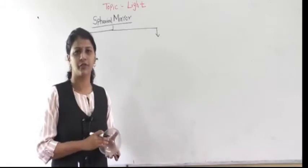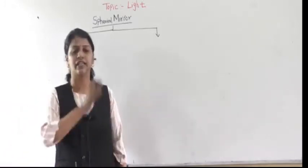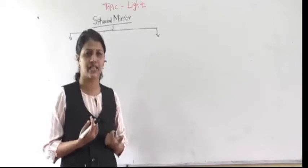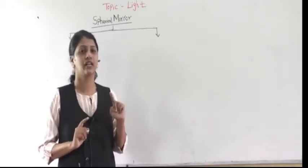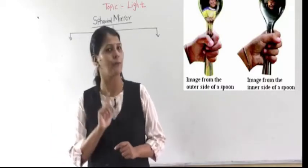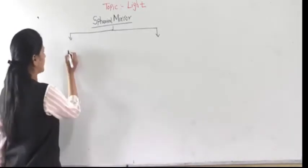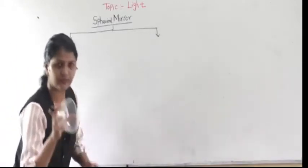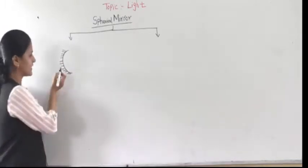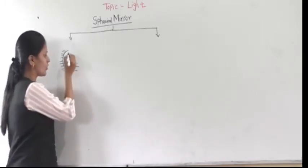If you have seen a spoon, you can get your image in the spoon — inward as well as outward. If you look at it like this you can see the image inward, and if you look from the outside you can also get your image, but there is a difference between the two images. A spherical mirror is a reflecting surface that is curved. Here the rough part means the reflecting surface is only on the shiny inner side.